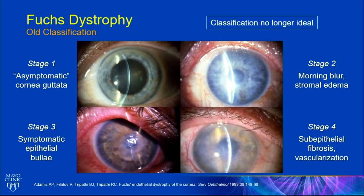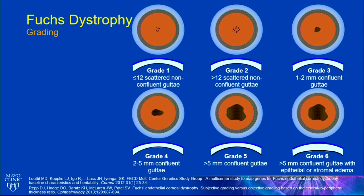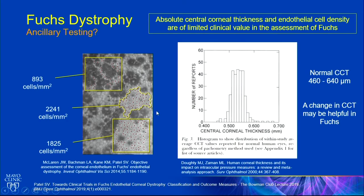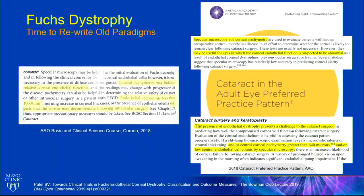Old classifications of this disease were useful when we did penetrating keratoplasty, but we don't do that anymore, so those classifications are no longer valid. Grading guttae from a research perspective remains subjective with poor inter-observer agreement, and it doesn't address subtle or subclinical corneal edema. Endothelial imaging using specular microscopy does not help in this disease, and central corneal thickness by itself is not helpful — it's the change in thickness and the map pattern that matter. Textbooks need to be revised, as they can be misleading.